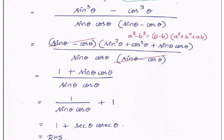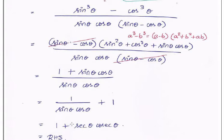After cancellation, the numerator contains sin²·theta + cos²·theta + sin·theta·cos·theta. Using the identity sin²·theta + cos²·theta = 1, this becomes 1 + sin·theta·cos·theta. The denominator is sin·theta·cos·theta. Splitting: 1/(sin·cos) + sin·cos/(sin·cos) = 1/(sin·cos) + 1. Since 1/sin is cosecant and 1/cos is secant, we get 1 + sec·theta·cosec·theta, which equals the RHS. Hence proved.